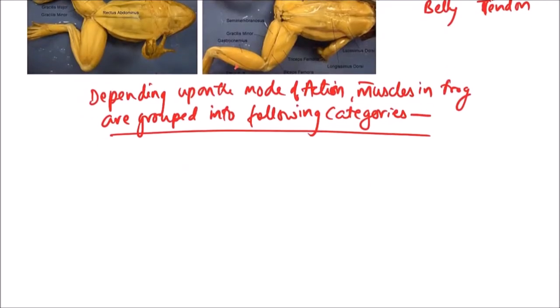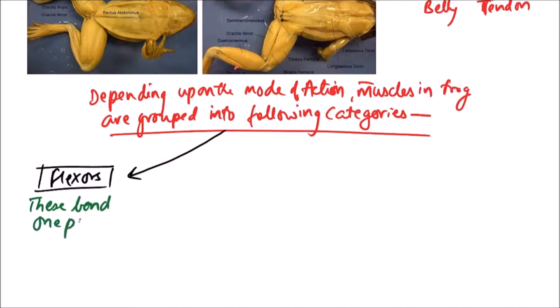First one is flexors. Flexors are muscles that bend one part on another. The examples include the biceps. Biceps flex the forearm over arm.